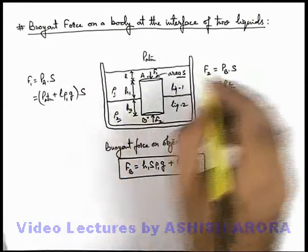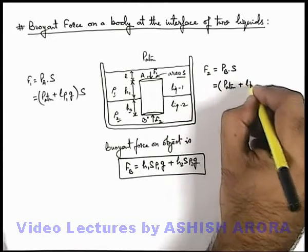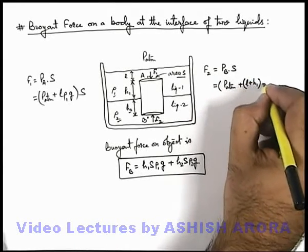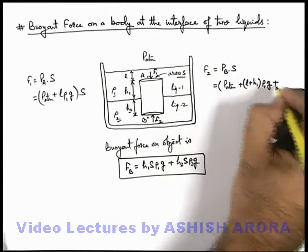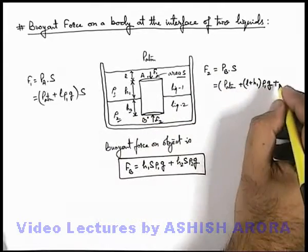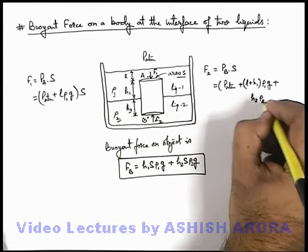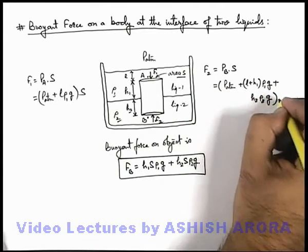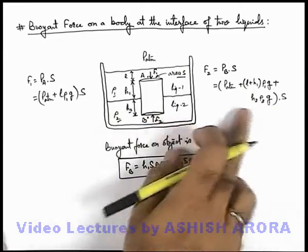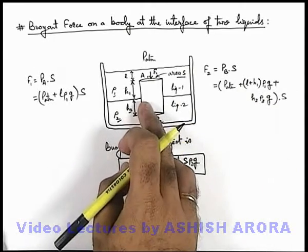Like at the top pressure is P atmospheric, and at the interface it must be plus L plus h₁ multiplied by ρ₁g, plus at this point it'll be h₂ ρ₂g. This multiplied by S, that is the force F₂ applied on the cylinder in upward direction.